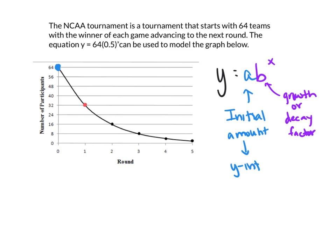And then it's going to decrease because each team plays another team. You're going to cut out half the field every time you play. So that's where you get the 0.5, and this is a decay factor because the graph is going down. We call it a decay factor when the graph is decaying. If the graph were going up, it'd be a growth factor.